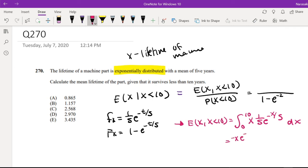Using integration by parts, we get negative x e to the negative x over 5, minus 5 times e to the negative x over 5, evaluated from 0 to 10.